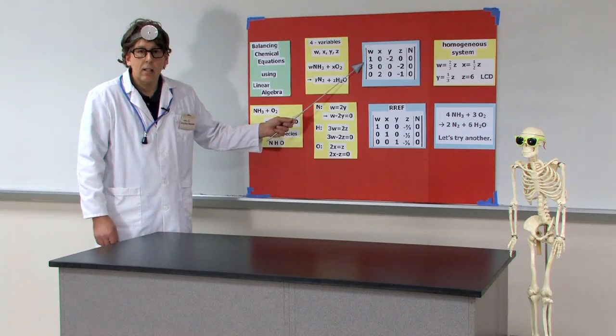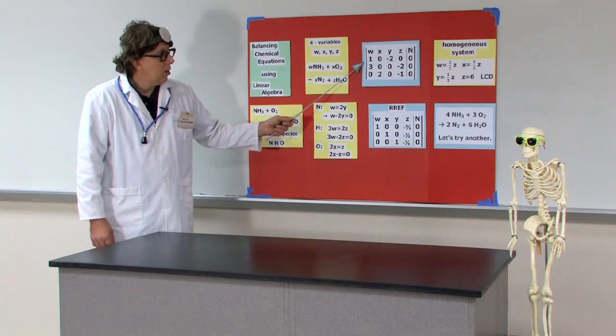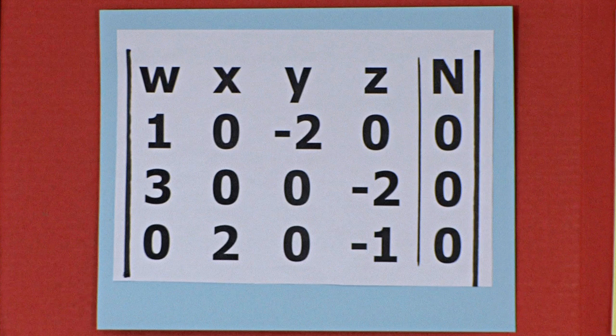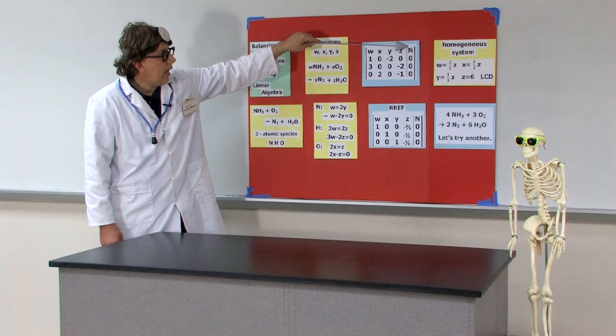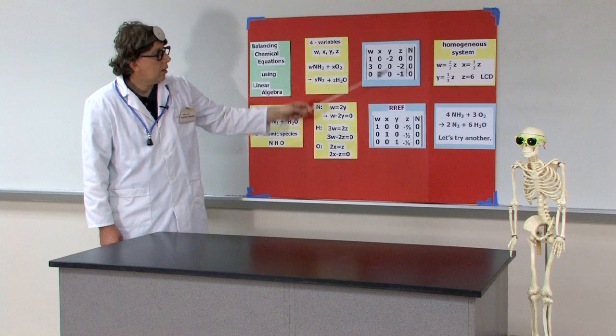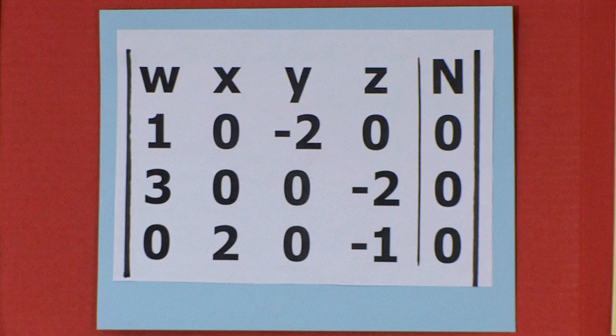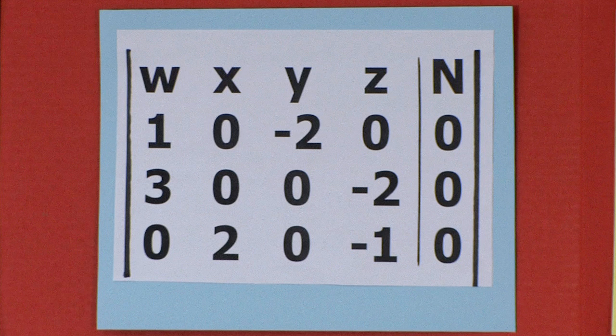Finally, we're into the matrix. So linear algebra. We see along the top, W X Y Z. And this augmented part of the matrix here, we can have any number we desire. Here we're setting them equal to zero. So we've got zeros in each of these rows.